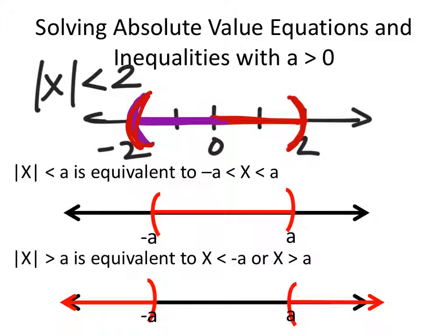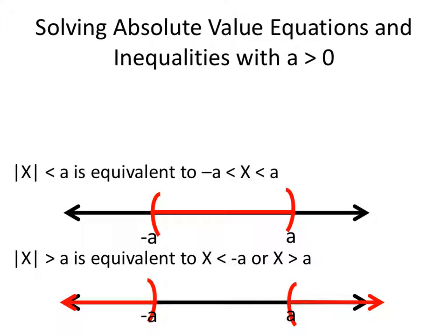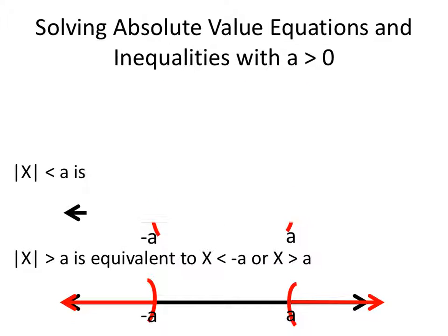So these would be the values in interval notation. It would start at negative 2 and it would go all the way to the right to 2, neither of which are included. On the other hand, let's go ahead and ignore this one because that's the one that we just did.